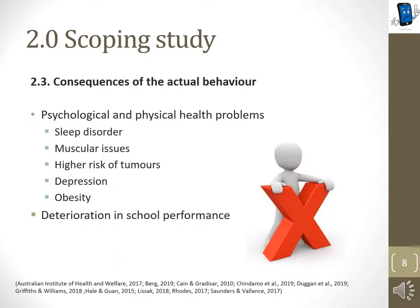The literature review showed that high screen time causes psychological and physical health problems. The duration of sleep is shortened by one hour and physical problems like depression or muscular issues arise. In addition, smartphones emit harmful radiation, which leads to a higher risk of tumours. Furthermore, children exercise less, so many of them become obese. Apart from the decline in health, the school performance of children deteriorates as well, as fewer children deal with their school work.